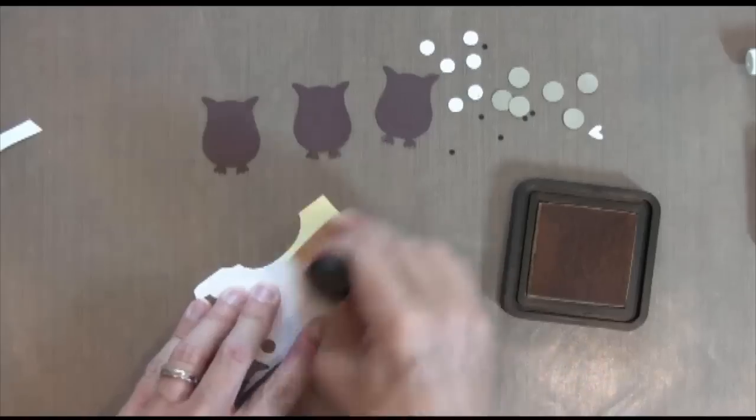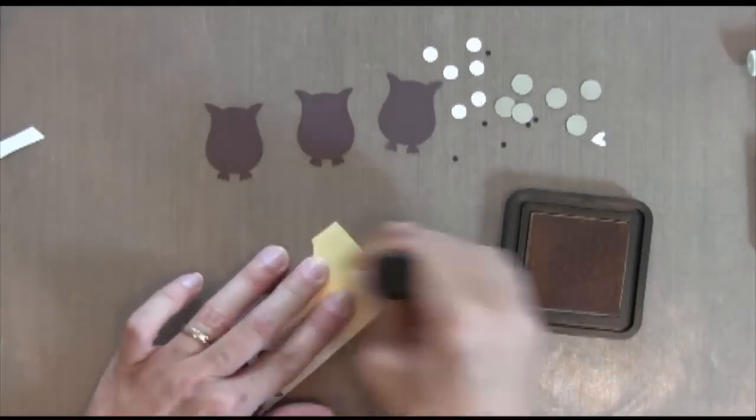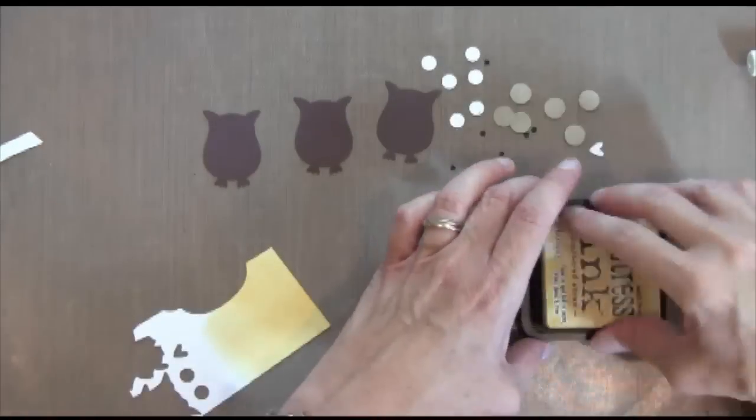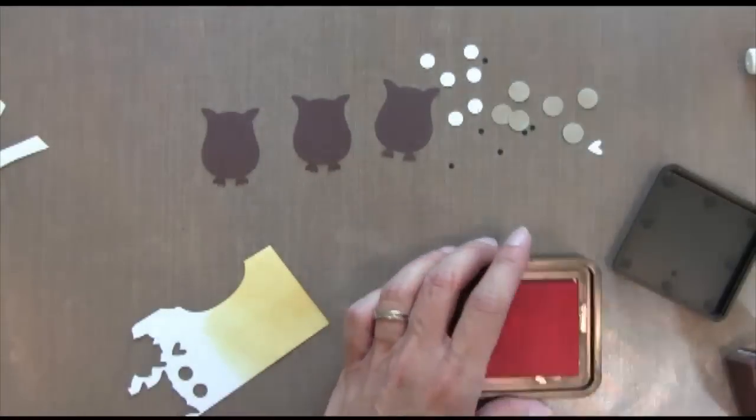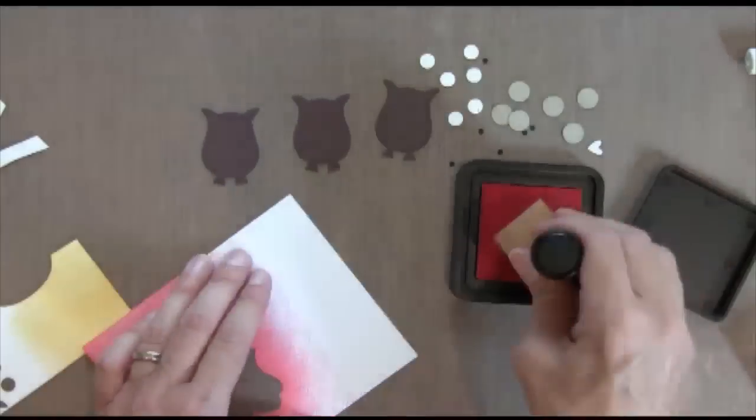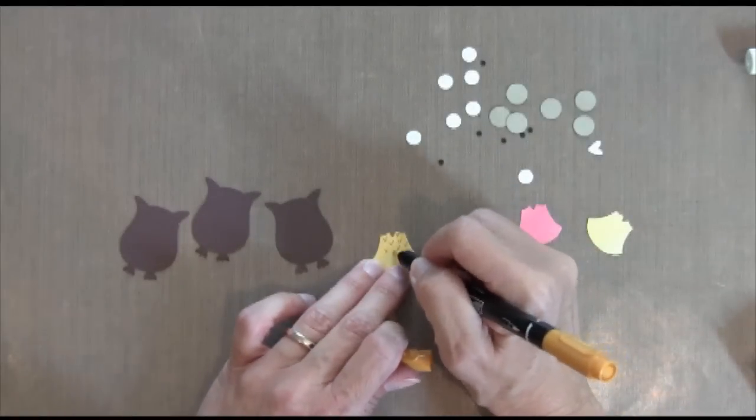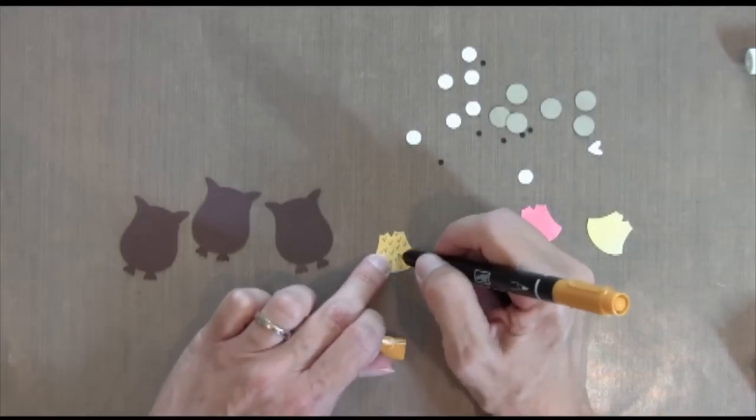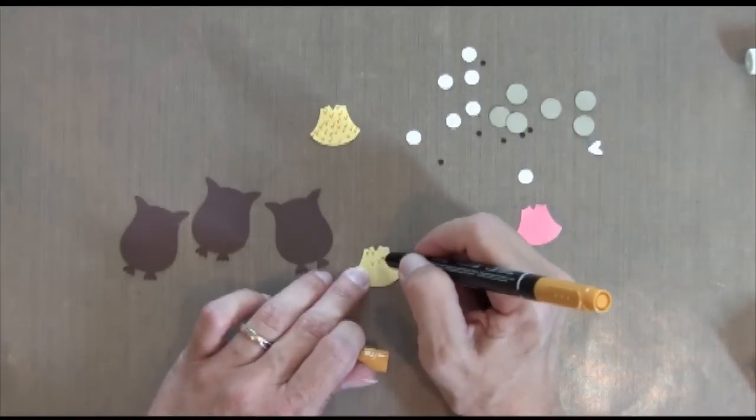For the bellies of these owls, I'm just going to ink up some scattered straw and some worn lipstick, and then I'm going to punch those out. And then I just went in there with some markers, and I just made some random V marks for their feathers.